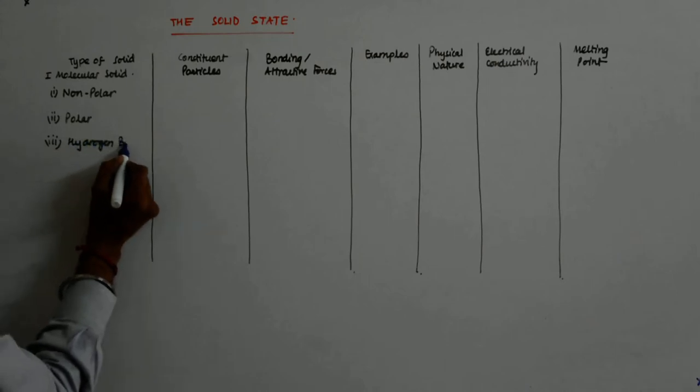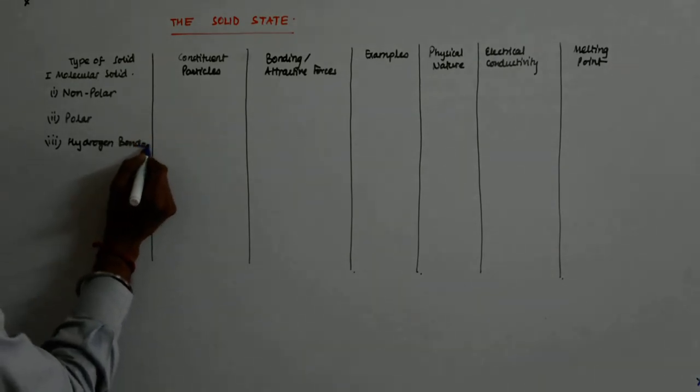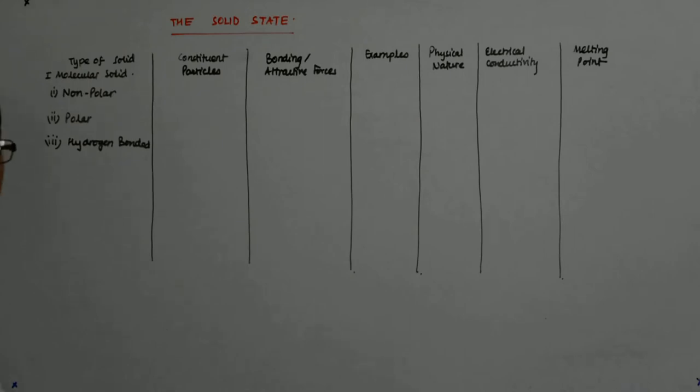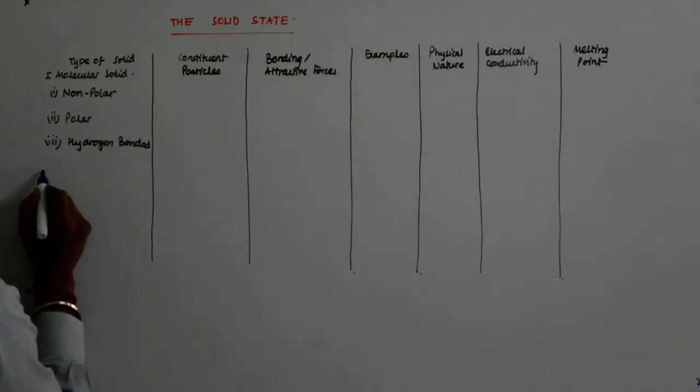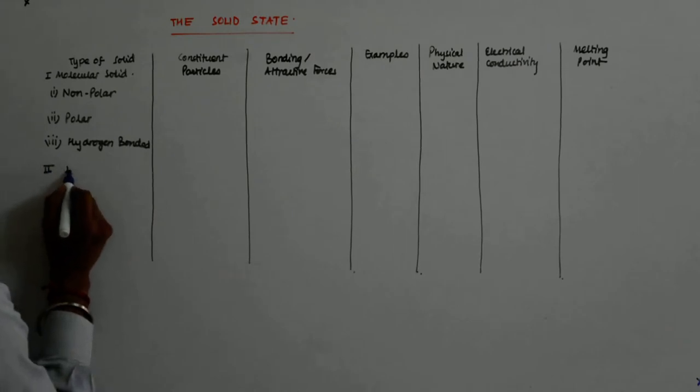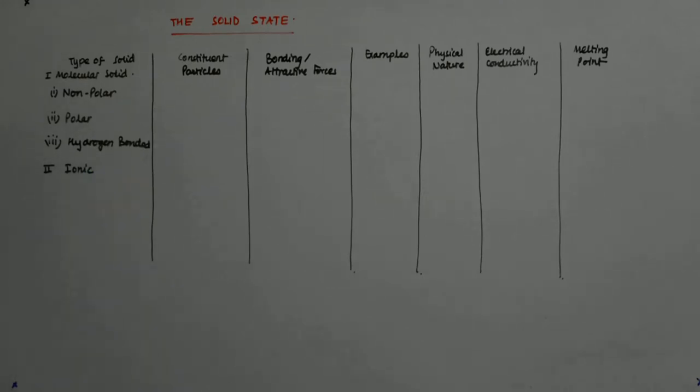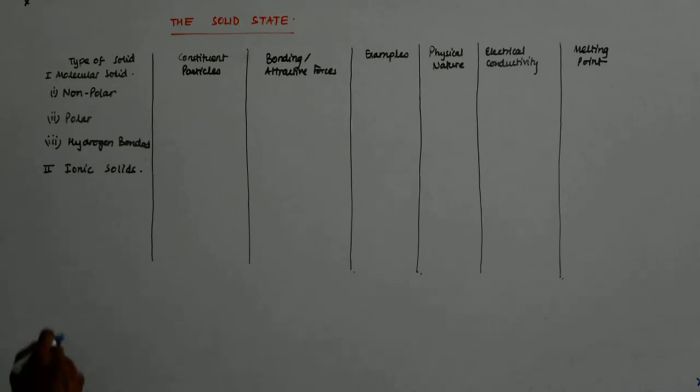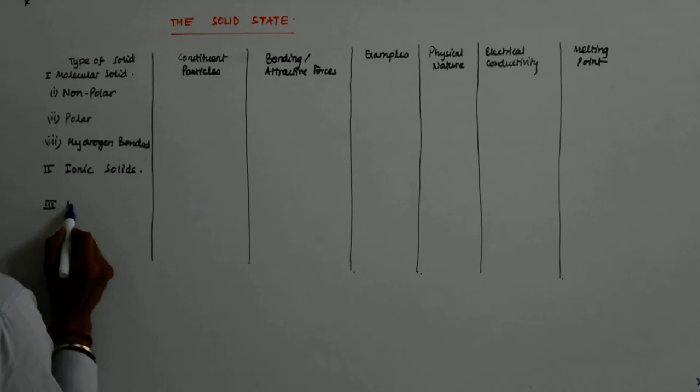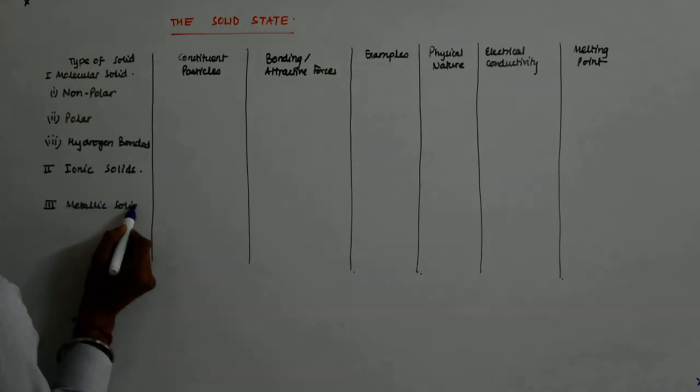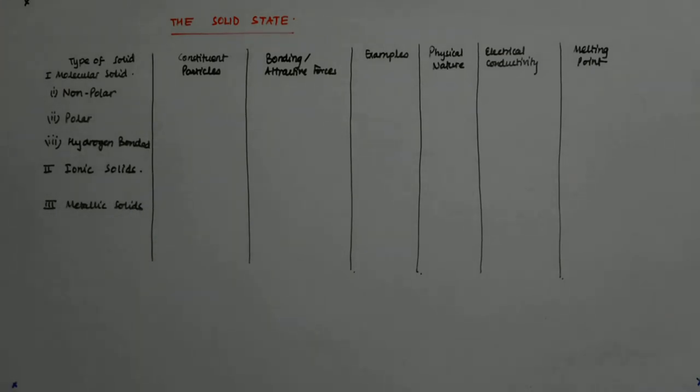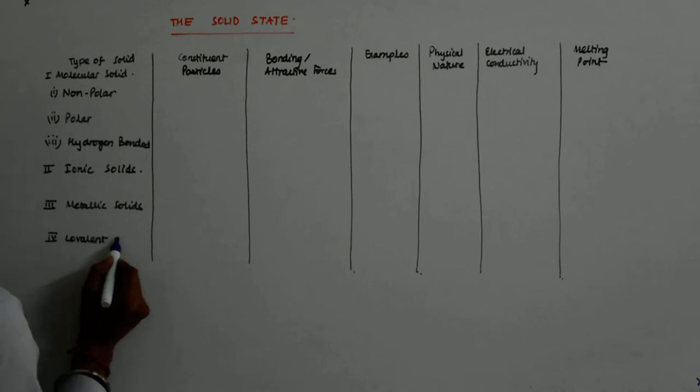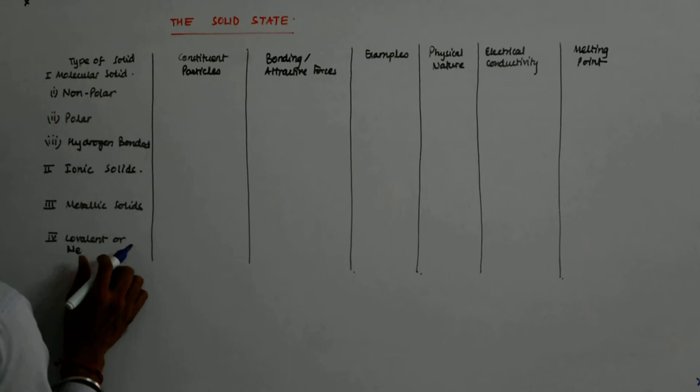and then we have hydrogen bonded. Then we had come to after the molecular solids we had ionic, the ionic solids, followed by that the metallic solids, and followed by that we had the covalent or network solids.